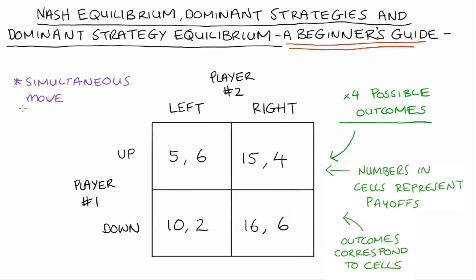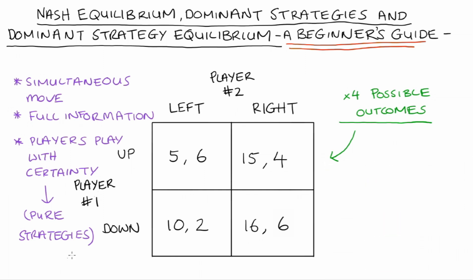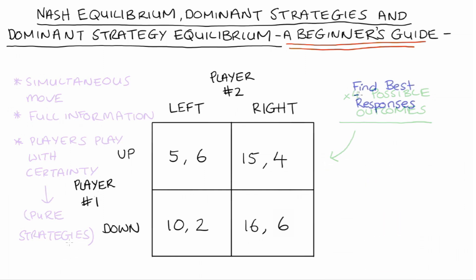Just to make some qualifications: our players are playing simultaneously, it's full information so all players know the game, and our players play their strategies with certainty — so we're only dealing with pure strategies. The other sort of case is called mixed strategies, where players can play their strategies with probabilities less than one.